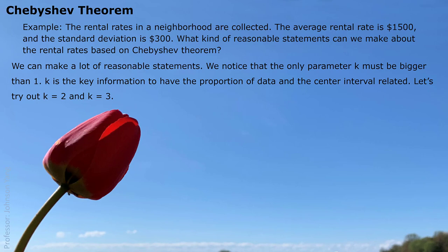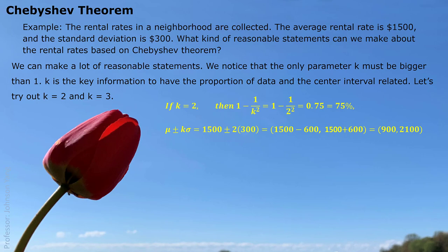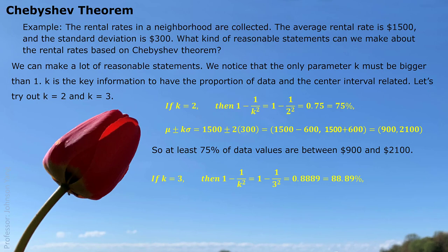Let's try k equals 2 or k equals 3 as two examples. If k is 2, then from 1 minus 1 over k squared, we get 75%. With k equals 2, we can calculate the interval: center $1,500, standard deviation $300, so we get $900 to $2,100. The statement would be: at least 75% of the data values are between $900 and $2,100. Similarly, if we use 3 for k, then 1 minus 1 over k squared gives us 88.89%.